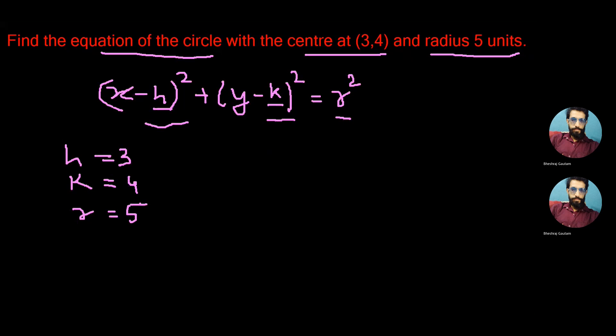So if we replace the value of h, k and r in the standard equation of the circle, we can write it as (x-3)² plus (y-4)² is equal to r², and in place of r, we can write 5².